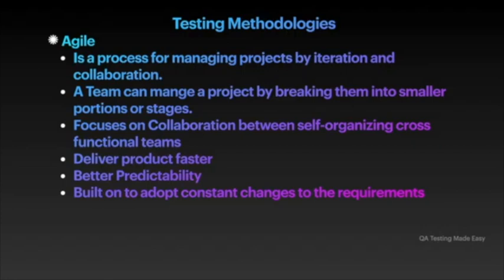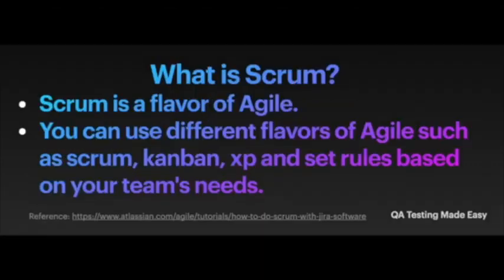Agile methodology focuses on collaboration between self-organizing, cross-functional teams so teams can deliver products faster with better predictability. Agile is built to adopt constant changes to requirements. Here's an example: the product owner writes requirements, sent to the dev, QA, and design teams. Developers start writing code, QA writes test cases. When developers finish, code is sent to QA. If something fails it's sent back to developers, then retested. After completion the software is deployed to UAT, then production.